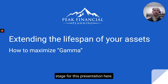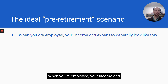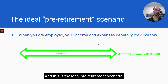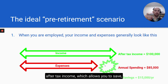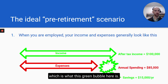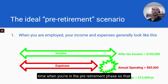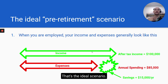Let's set the stage. We're going to start by discussing what I call the ideal pre-retirement scenario. When you're employed, your income and expenses generally look like this. You have $100,000 of after-tax income, and your annual spending is $85,000 — so you have lower expenses than after-tax income, which allows you to save. That green bubble allows you to build wealth over time in the pre-retirement phase so that you have wealth when you're planning to retire. That's the ideal scenario.